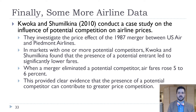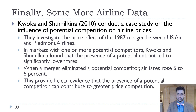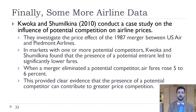Kwaka and Shemokina conducted a case study on potential competition and airline prices, looking at the 1987 merger between U.S. Air and Piedmont Airlines. They found that in markets with one or more potential competitors, the presence of a potential entrant led to significantly lower fares — airlines were keeping fares low to deter entry. When the merger between U.S. Air and Piedmont eliminated a potential competitor, airfares rose by 5% to 6%. There is clear evidence that more competitors in a market leads to lower prices, though fierce price competition can still occur even with few competitors, depending on the market.